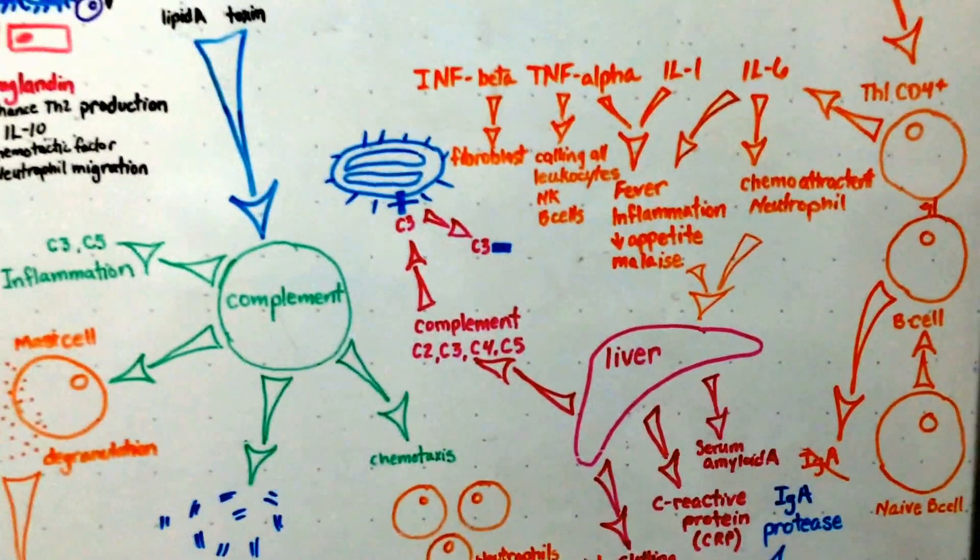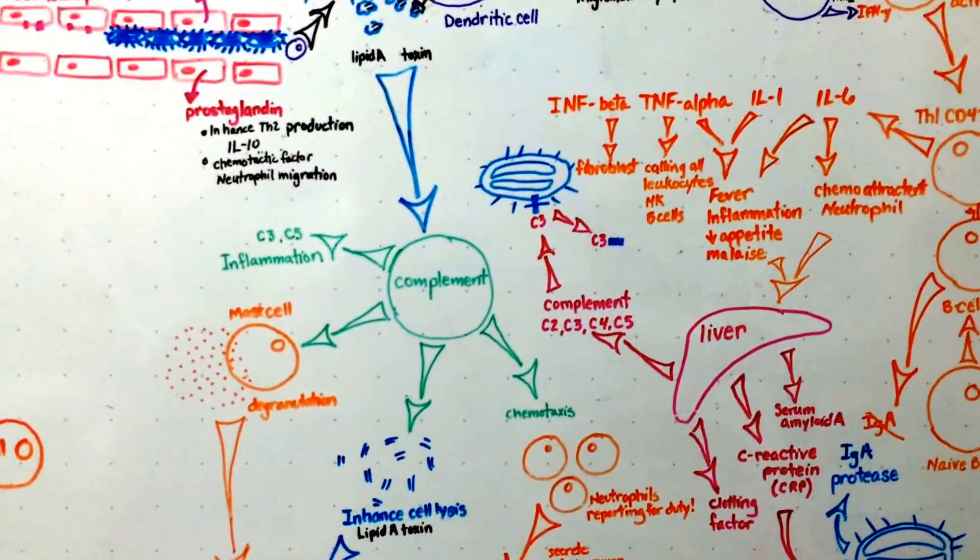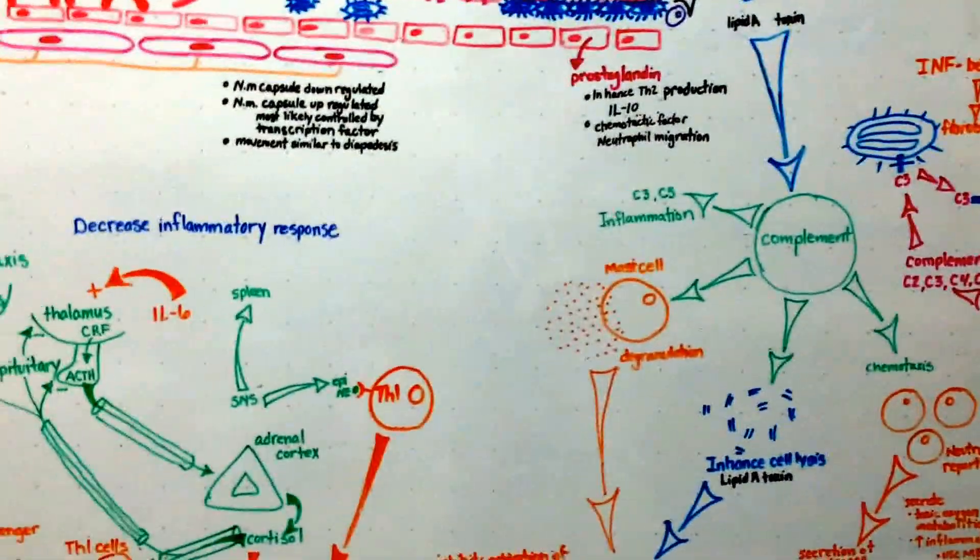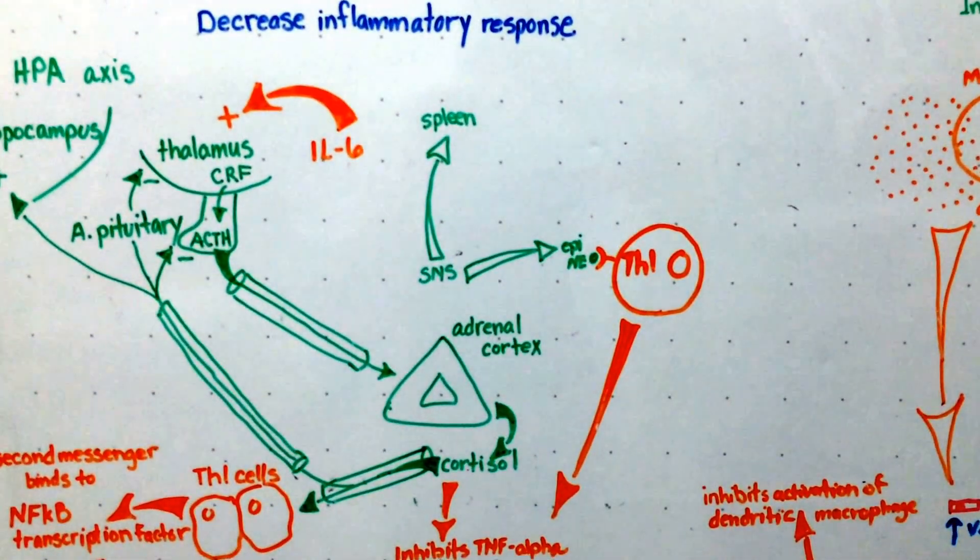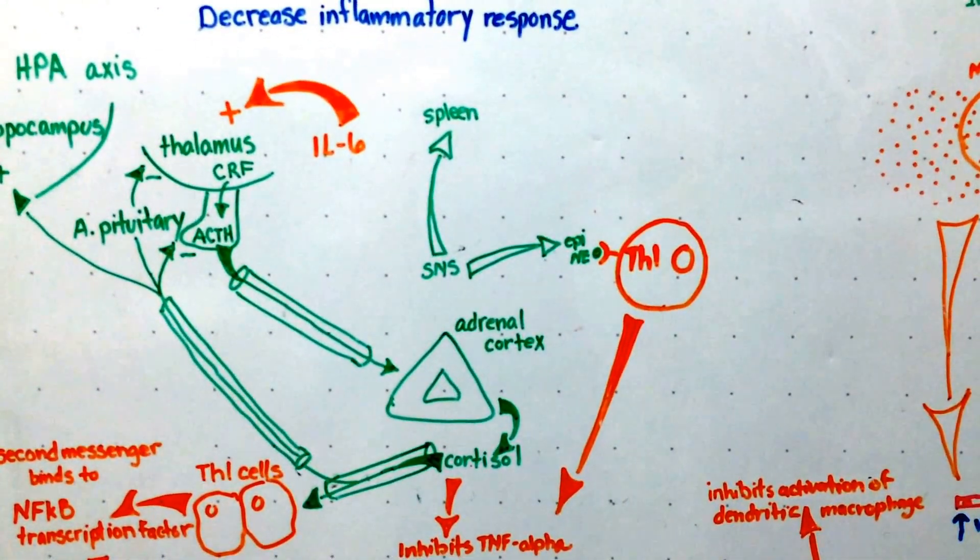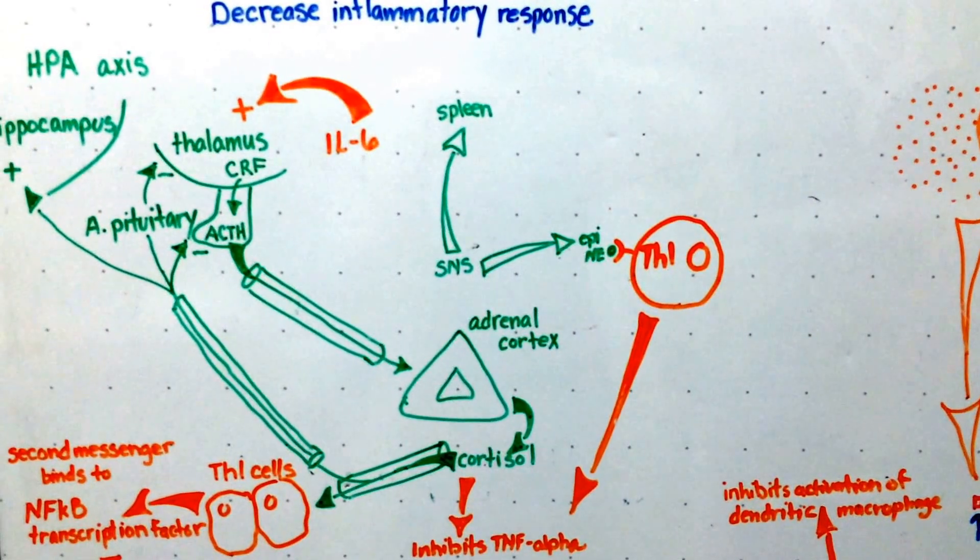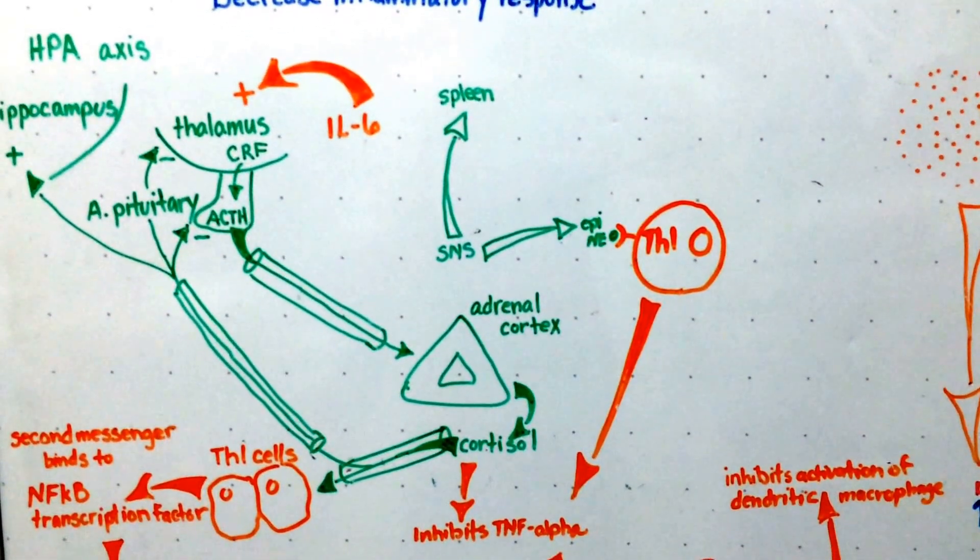Okay. Let's pull back out. And that interleukin-6 that's being released is also over here working on, you can see it activating our HPA axis and the process that happens there.